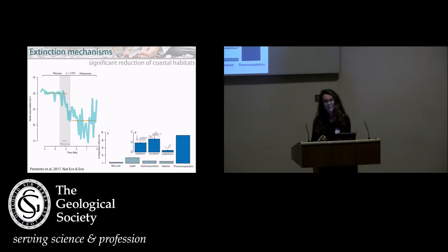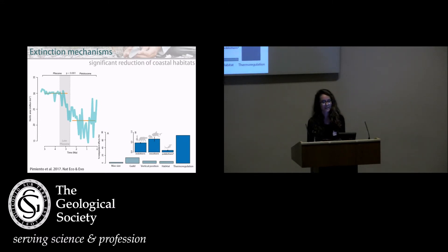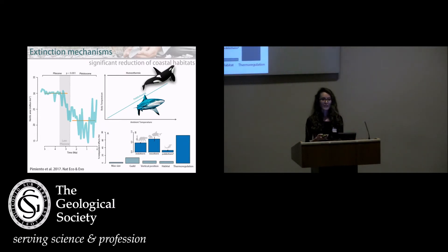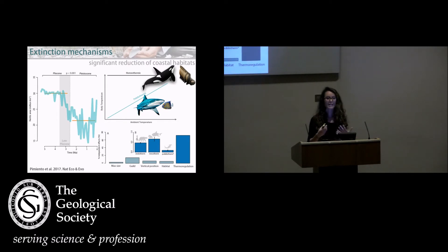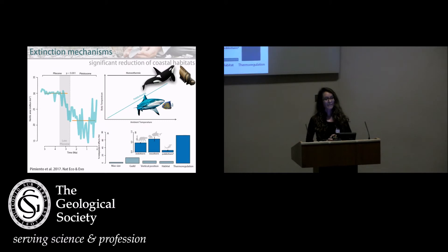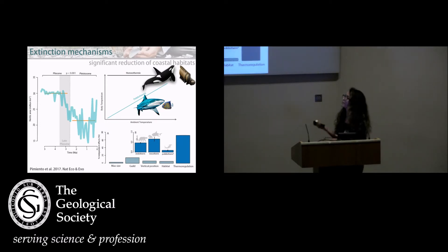Within thermoregulation, homeothermic animals — mesotherms and endotherms — those capable of controlling their body temperatures had higher chances of going extinct, as opposed to poikilotherms or ectothermic sharks. Homeothermic animals need more resources than poikilotherms to maintain their metabolic demands to control body temperature. That's why we think this corroborates the area hypothesis: when you need a lot of resources, you need a lot of area, and if area is diminished, you have less availability of resources.